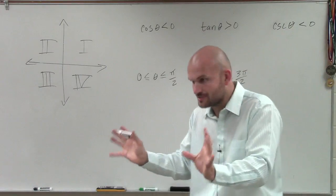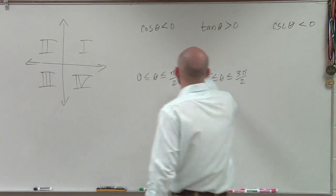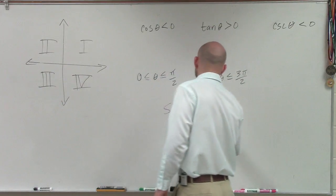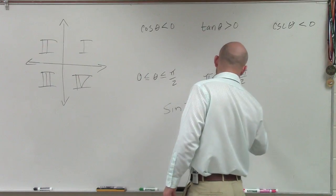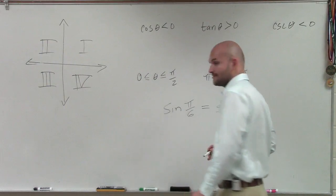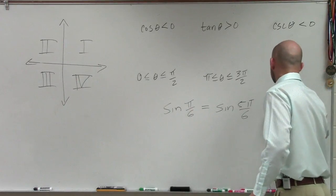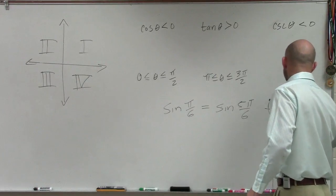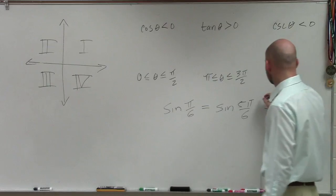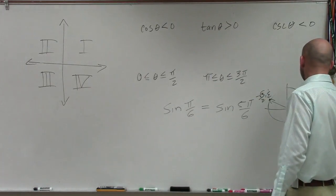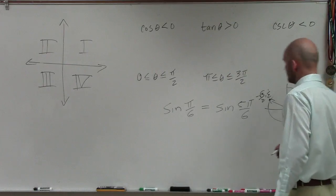We had two answers. Remember we said the sine of pi over 6 was equal to the sine of 5pi over 6? Those two angles had the exact same y-coordinates. That was negative square root of 3 over 2, comma 1 half. This one was square root of 3 over 2, comma 1 half.